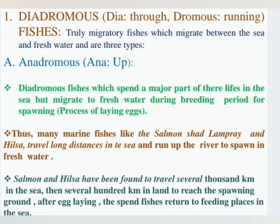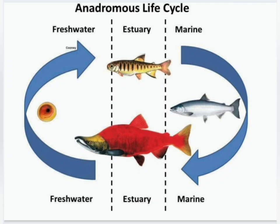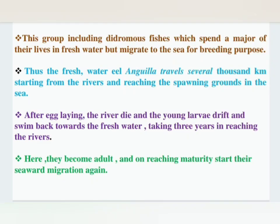Anadromous fish spend the major part of their life in the sea. At reproduction time, they migrate to freshwater. Examples of anadromous fish are: Salmon, Shad, Lamprey, and Hilsa. They travel several hundred kilometers from the sea to deposit their eggs.